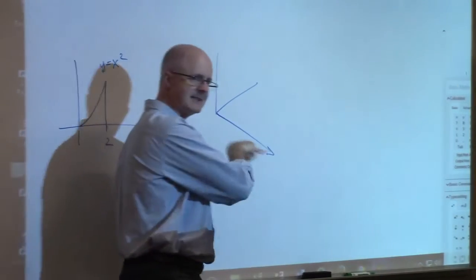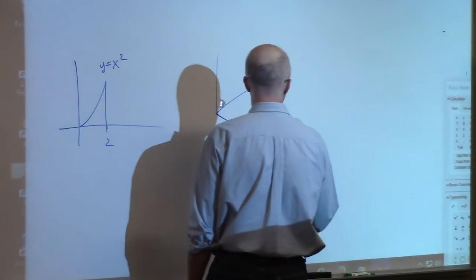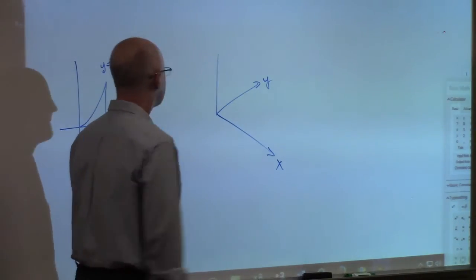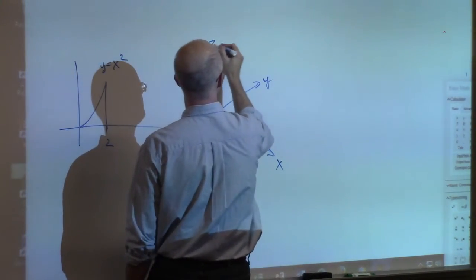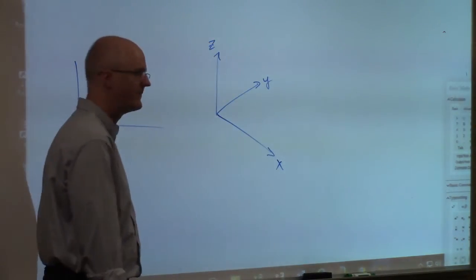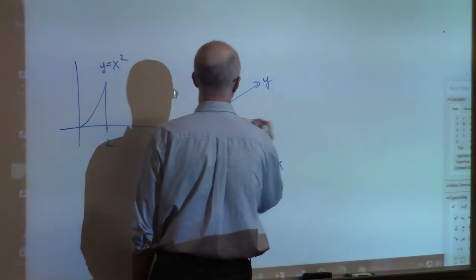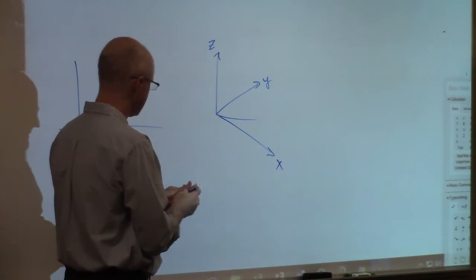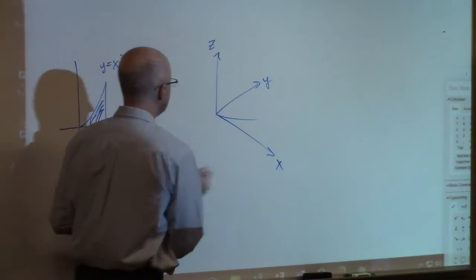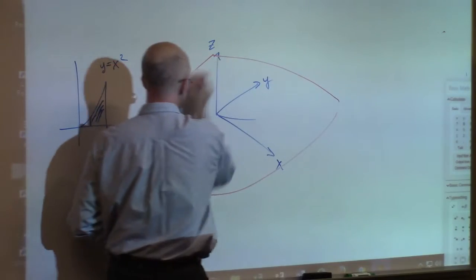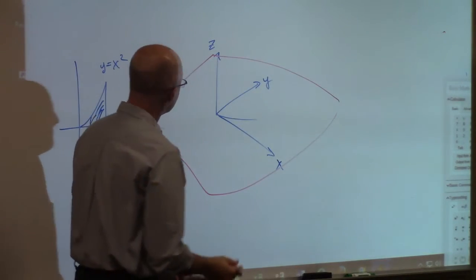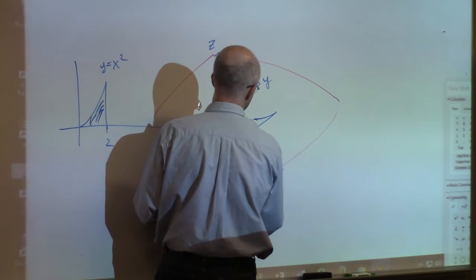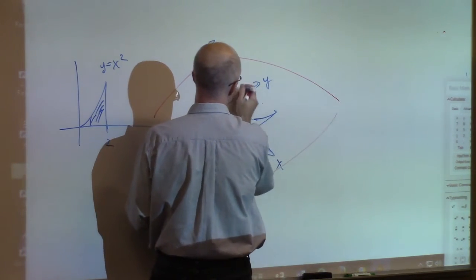Imagine an x axis kind of going through right here. A y axis kind of going into the board there. And say a z axis going upward. Our region here, the shaded region. Now you've got to think of it three dimensionally as lying in a plane that's kind of going into the board like this. This is 2 here. This is 4 here by the way.